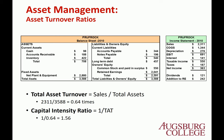The third asset management ratio is the total asset turnover ratio, which measures how effectively you use assets to generate sales. If you use assets more effectively, you sell more with the same amount of assets, so total asset turnover increases. Higher total asset turnover means more effective asset use. The capital intensity ratio is simply one divided by total asset turnover, so lower capital intensity means more effective use of assets.